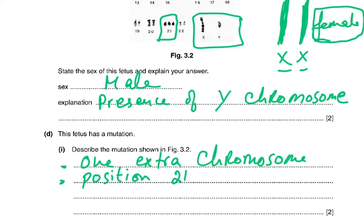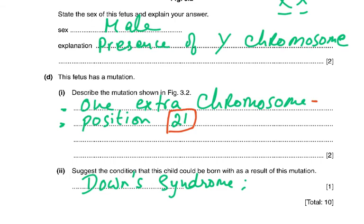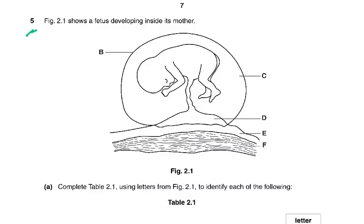The fetus has a mutation. Describe the mutation shown in figure 3.2: on chromosome number 21, instead of a pair there are three chromosomes — one extra chromosome on pair 21. The name of this condition — it is not a disease, it is a genetic disorder — is Down syndrome. This is part of your syllabus, which is why they ask it. If you know the syllabus well and understand it, the answer is definite.